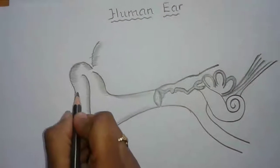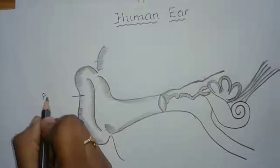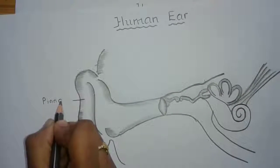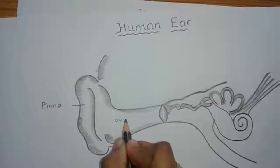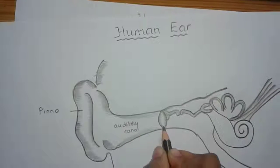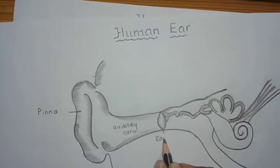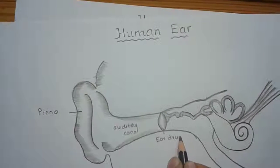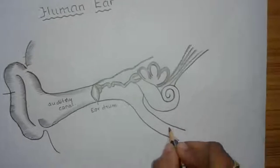Now let us label the parts. This is pinna, and this is the auditory canal, and eardrum or tympanum. This is eustachian tube.